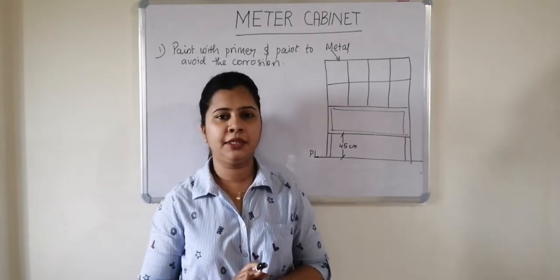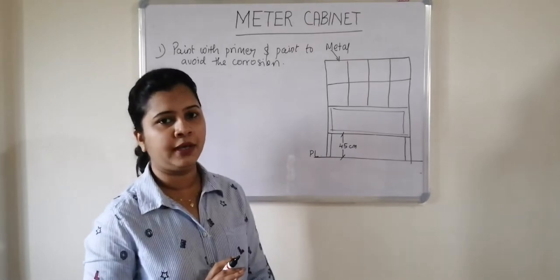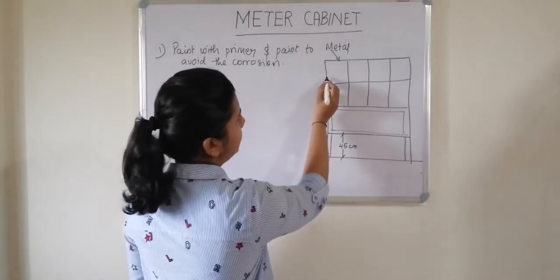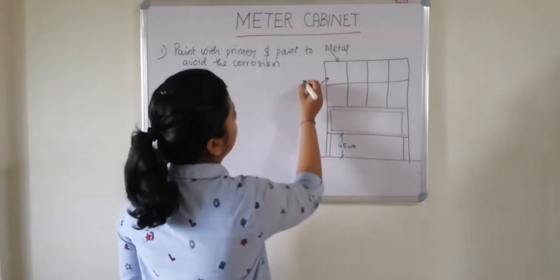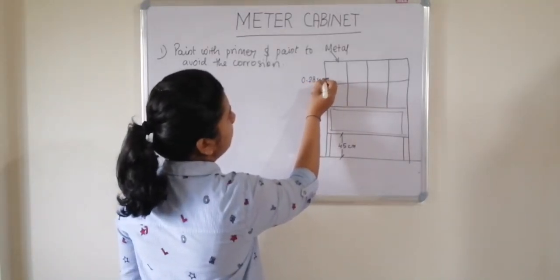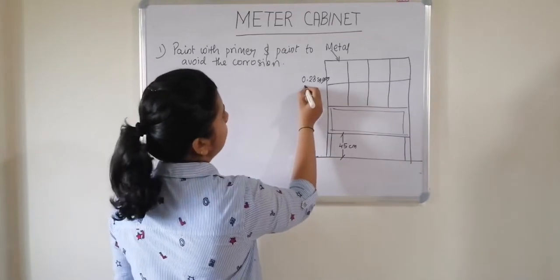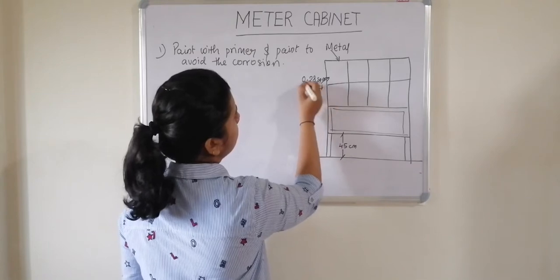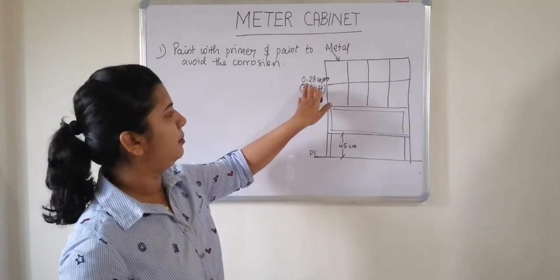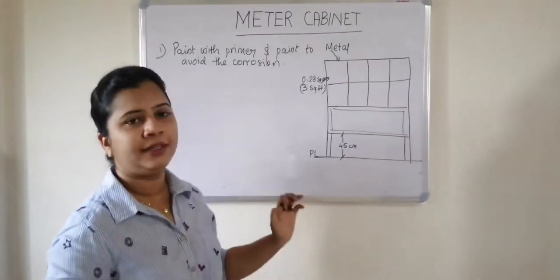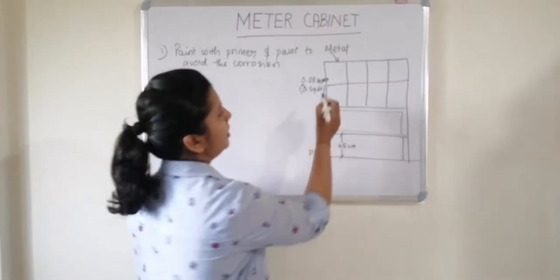Now each flat will contain one meter box, so depending on that you should calculate the size of the meter panel. Now let me tell you that one single meter box contains or consumes the size 0.28 square meter. The area consumed by a single meter box is 0.28 square meter, that is 3 square feet. A single meter box will consume minimum area of 0.28 square meter, that is 3 square feet. According to this, you will have to calculate the area of the total meter panel.